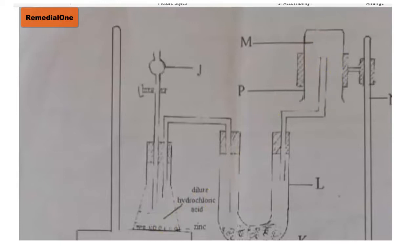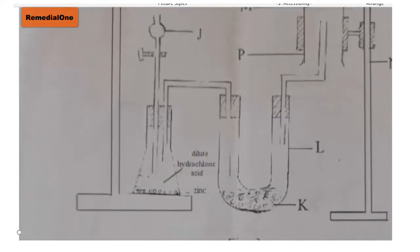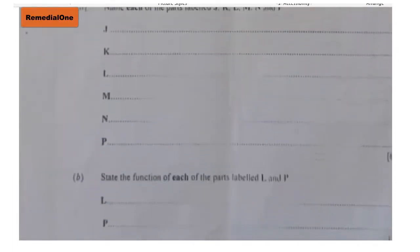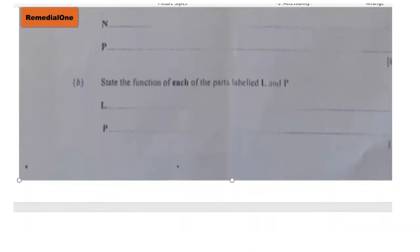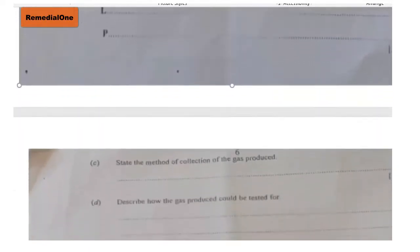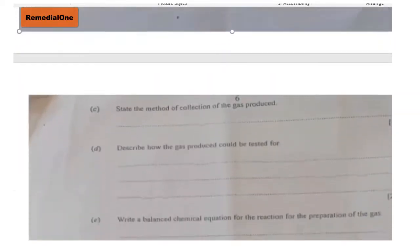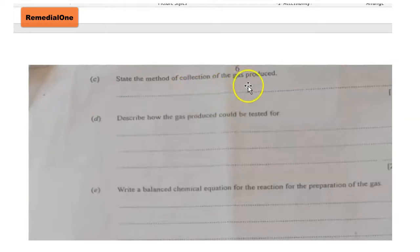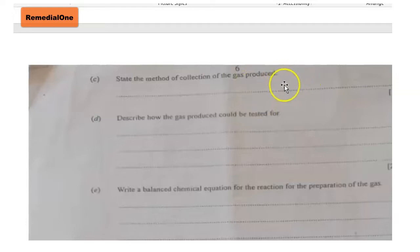The next question asks us to state the method of collection of the gas. As indicated in the diagram, because the gas jar has been inverted, the method is by upward delivery. So the answer is upward delivery, or you can write downward displacement of air.